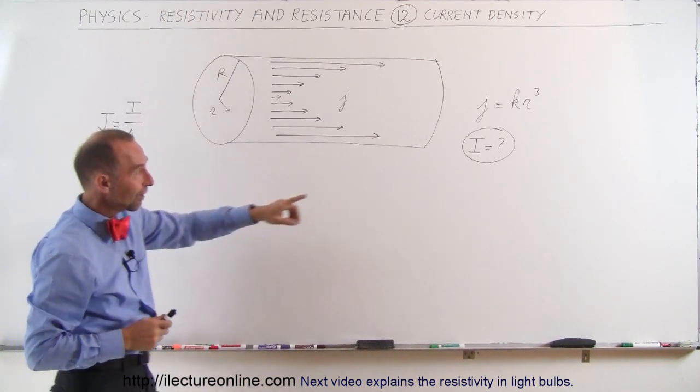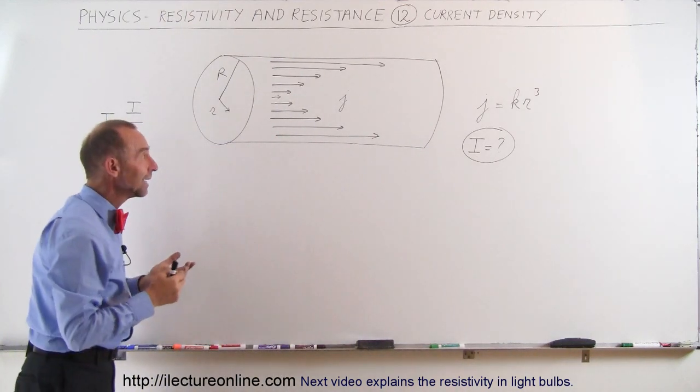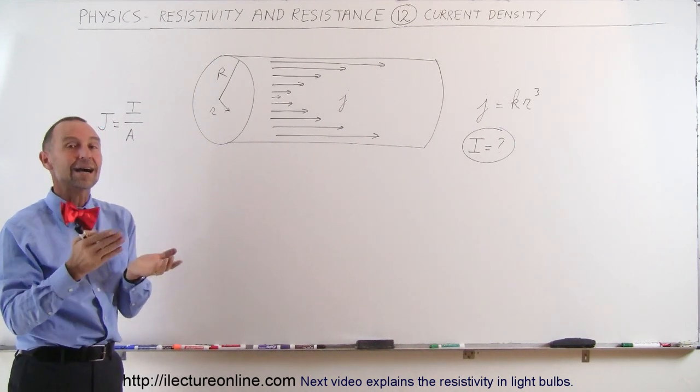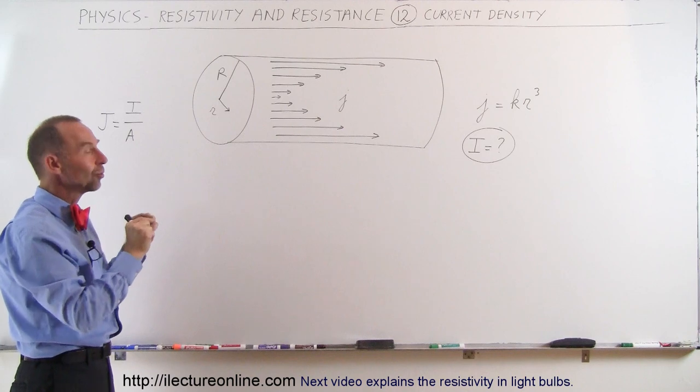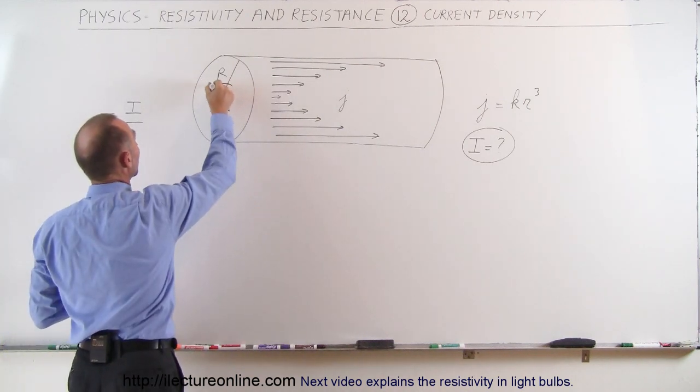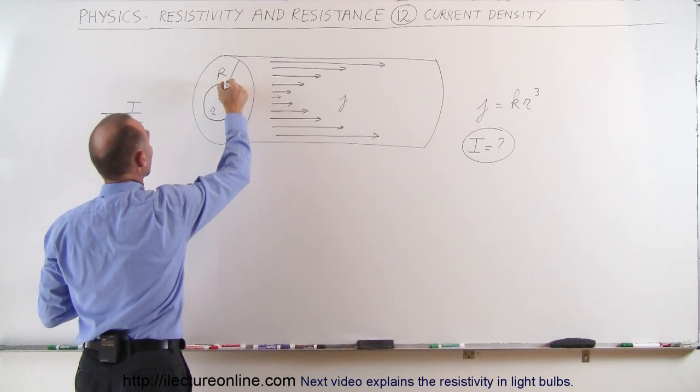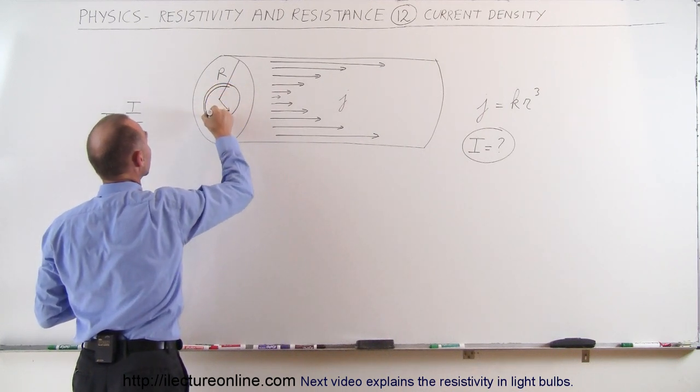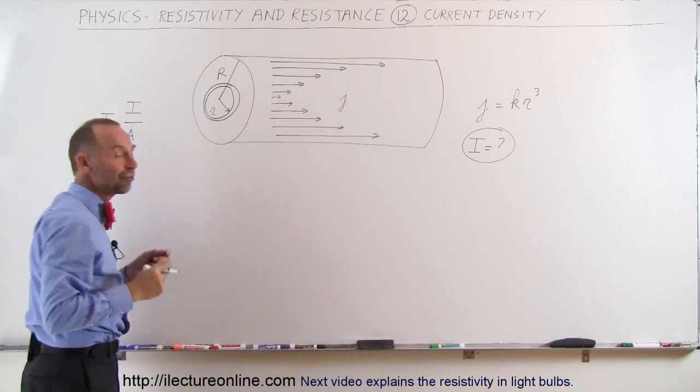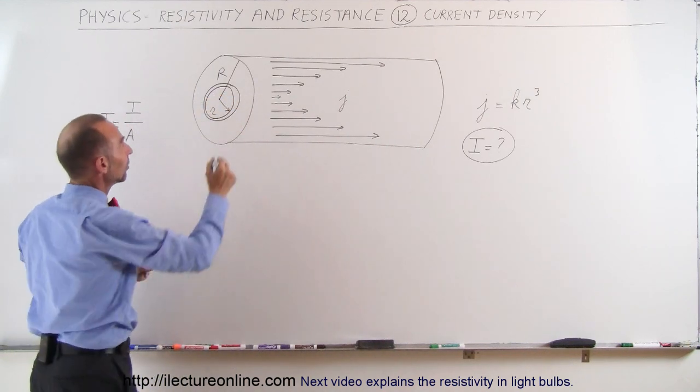And so if we're trying to find the total current in this conductor what we need to do is, let's see here, find a small little di, a small little current region where the current is the same everywhere. And to do that we probably want to draw a very small little ringlet like so.